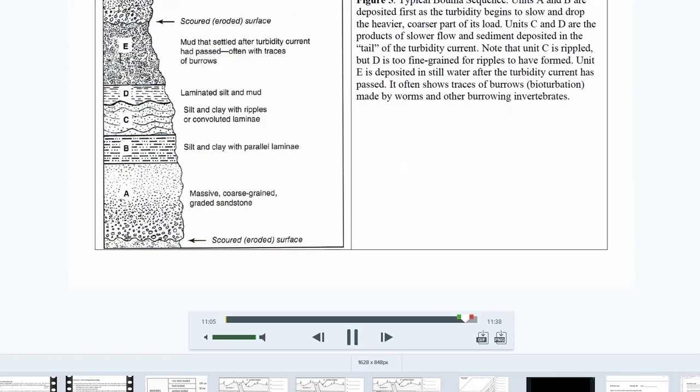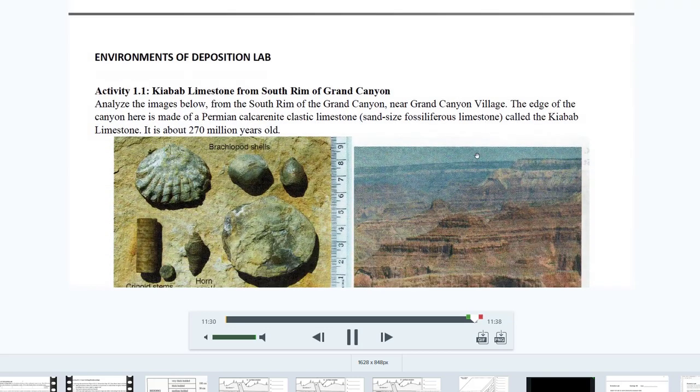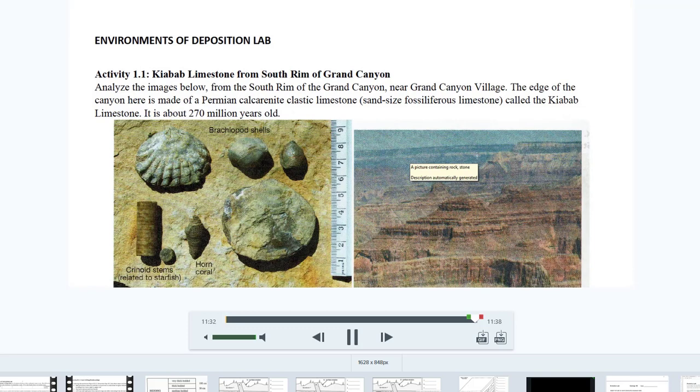And makes a capping unit for the Bouma sequence. And often this unit is bioturbated. Lots of worms and organisms start burrowing through here looking for organic material. And then this next layer up here is the next turbidity current. So usually there's a scour mark, where there's erosion from the turbidity avalanche coming down and taking parts of the top of letter E off. And then making a new Bouma sequence up here. So that's the Bouma sequences. Sedimentologists use those quite a bit to determine their environmental deposition. So actually I'm going to stop here and make another video for this next part.